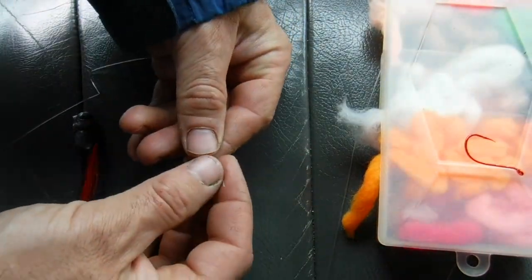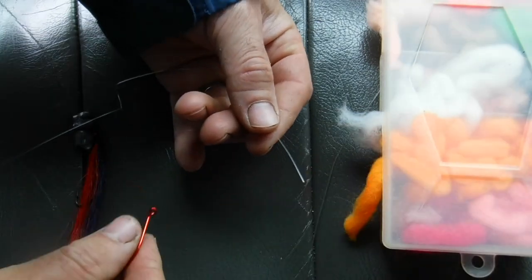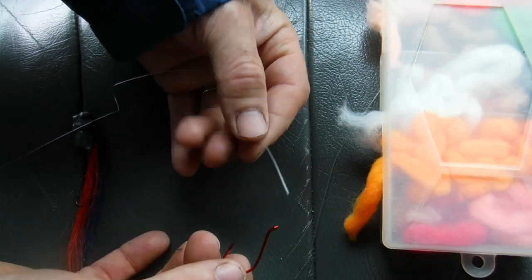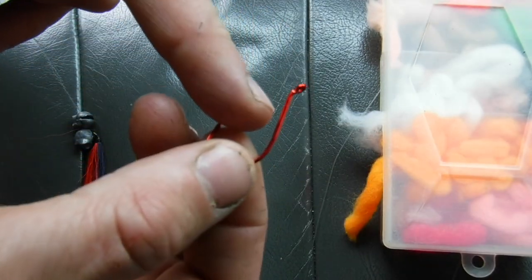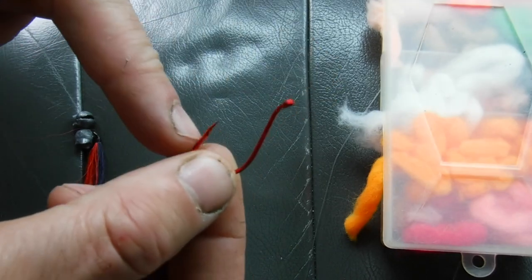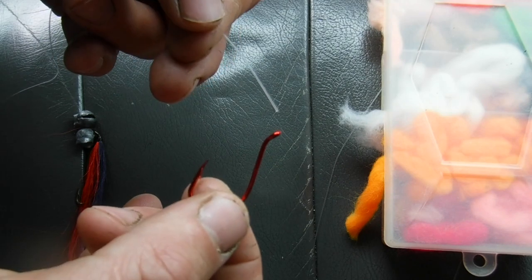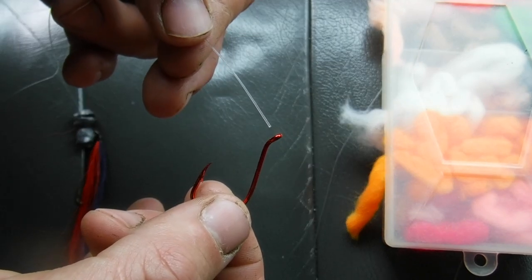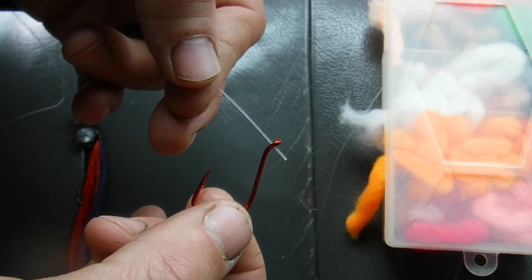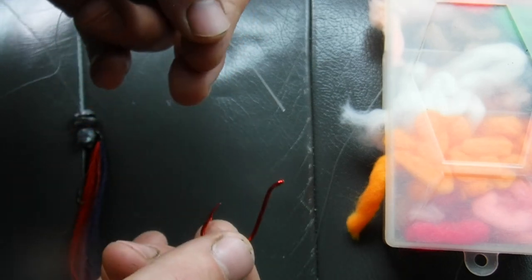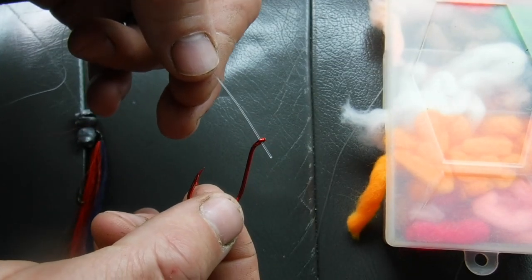Next thing I do is I go to the other end of my leader. I take my snelled hook and you can see that this hook is actually curved up and away from the shank of the hook. I prefer that. I'm going to start at the top. I'm not going to do that standard fisherman's knot anymore. I'm going to start at the top.